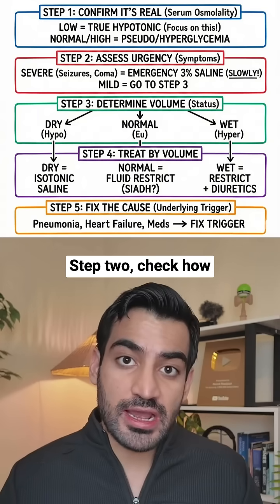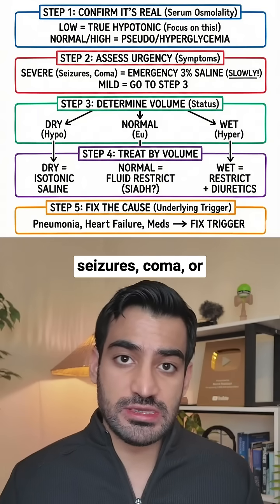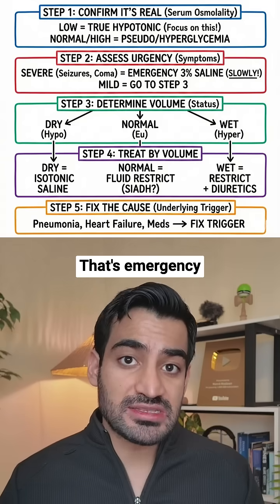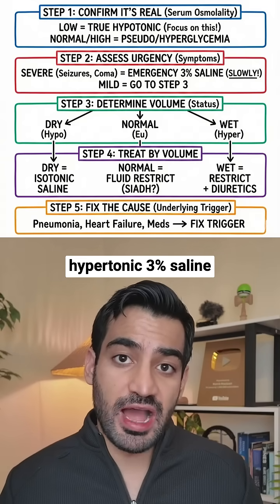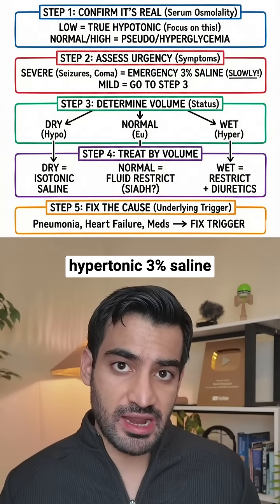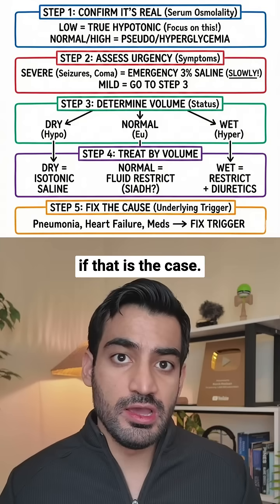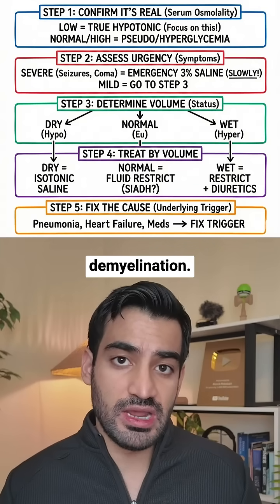Step two: check how sick the patient is. Are they having seizures, coma, or severe confusion? That's emergency hyponatremia. You have to give hypotonic 3% saline slowly in the ICU. If that is the case, you correct carefully to avoid osmotic demyelination.